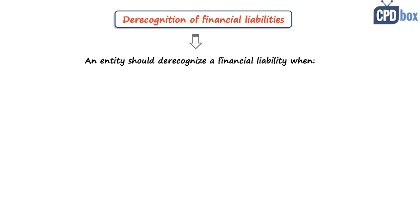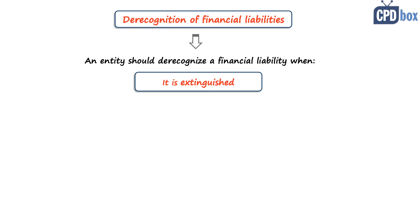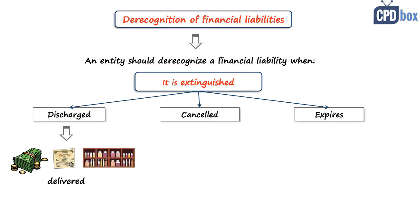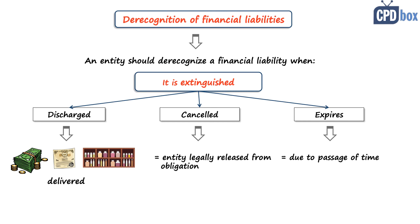The rules for de-recognition of financial liabilities are more simple. An entity should de-recognize a financial liability when it is extinguished — that is, when the obligation specified in the contract is discharged, cancelled, or expires. The liability is discharged when the entity delivers cash or financial assets or goods; it is cancelled when the entity is legally released from its primary obligation; and it expires due to passage of time. Here, the rules focus more on legal substance than economic substance.